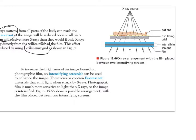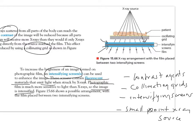Another way of increasing contrast by making the image brighter is by using an intensifying screen. These contain fluorescent materials that, when hit by x-rays, emit light. So the photographic film is not just receiving x-rays — it's receiving x-rays and the light given off by this fluorescent film, which is much more intense. So your image is intensified. So we have contrast agents, collimating grids, intensifying screens, and small point x-ray sources — four things that will increase the contrast or sharpness of your image.